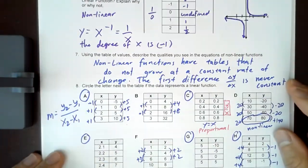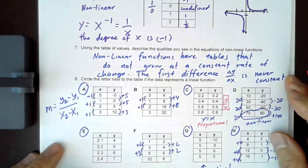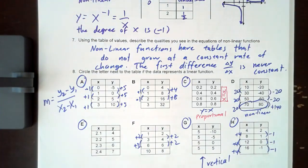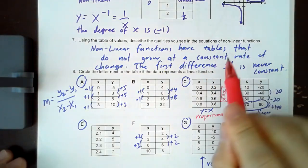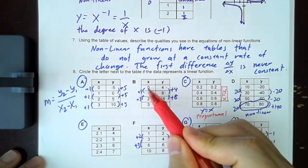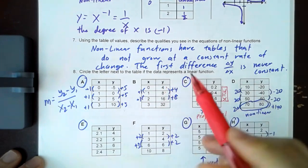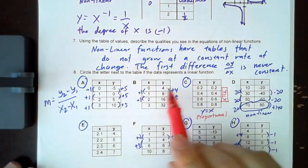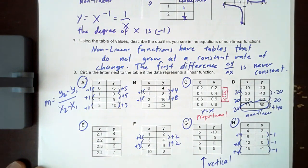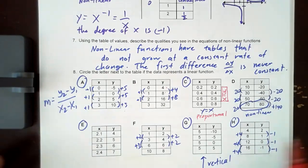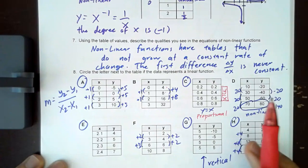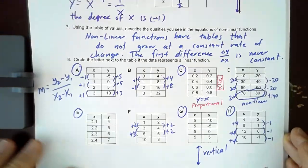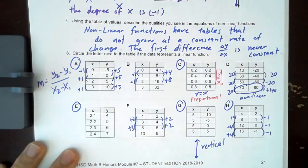Using the table of values, describe the qualities you see in the equations of nonlinear functions. Ultimately class, nonlinear functions have a, whatever you see in the change in y, the change in your output, and whatever you see in the change in your input, that ratio, the ratio of your change in y and your change in x has to be consistent the entire time for linear functions. So similarly, if that ratio is not consistent every time, then that means what you're dealing with in the table is not linear.